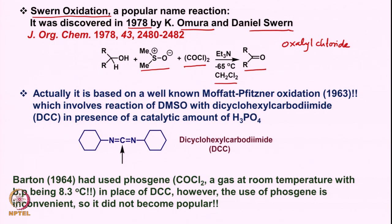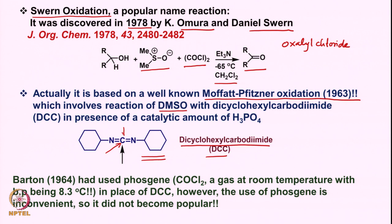This oxidation is actually based on a well-known oxidation called Moffatt-Pfitzner oxidation, discovered in 1963, which involved reaction of DMSO with dicyclohexylcarbodiimide (DCC). As you can see, the carbon atom in DCC is flanked by two nitrogens via double bonds, making this carbon highly electrophilic, particularly in the presence of a catalytic amount of an acid such as phosphoric acid.